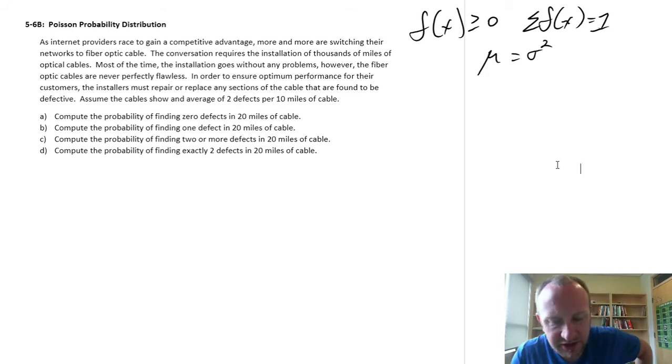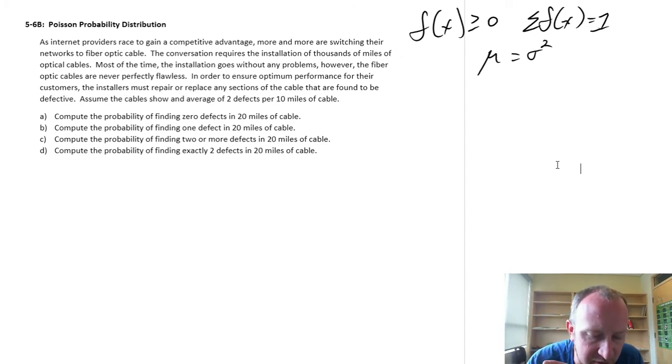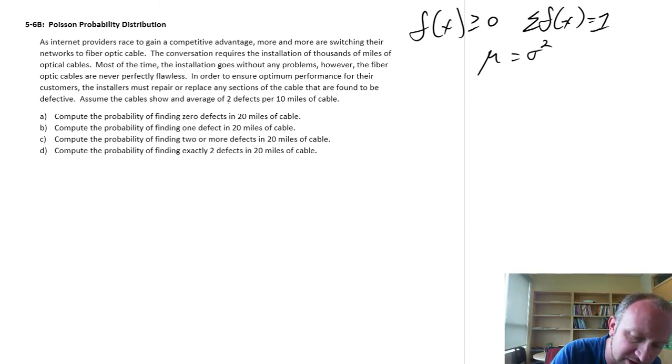In this exercise we have internet providers racing to gain some competitive advantage and switching over to fiber optic cable. Conversion requires installations of thousands of miles of optical cables. Most of the time installation goes without problems. However, the fiber optic cables are never perfectly flawless. In order to ensure optimum performance, the installers must repair or replace any cables found to be defective. So here finally we get to the relevant information.